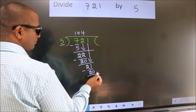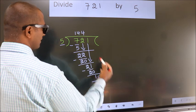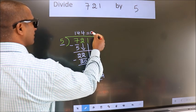No more numbers to bring down, so we stop here. This is our remainder. This is our quotient.